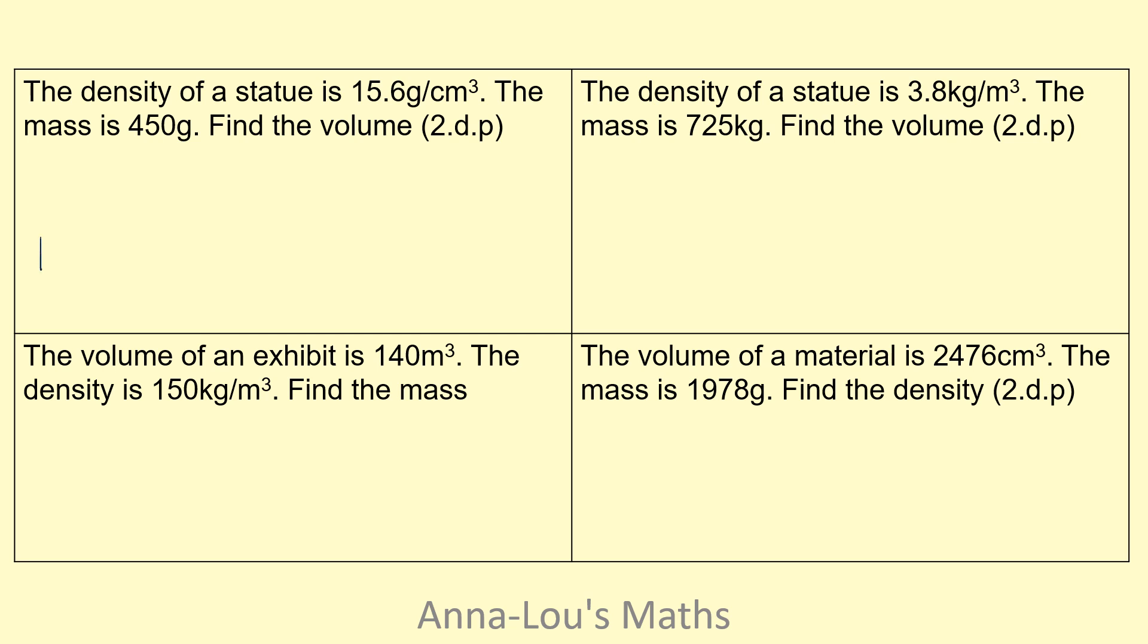So again, density, mass, volume. I'm looking for volume, so it's mass divided by density. So my mass is 450, my density is 15.6. And if I do that to two decimal places, you should end up with 28.85. And because it is volume, it is centimeters cubed. I know it's centimeters cubed because it tells me in my density what units—it tells me I'm using grams and centimeters cubed.